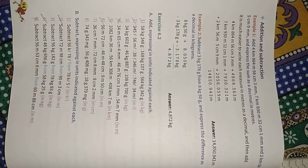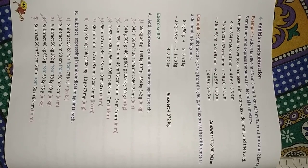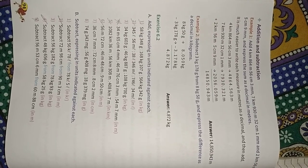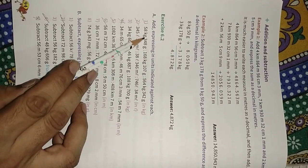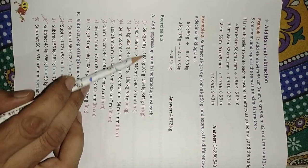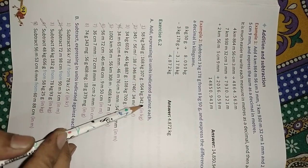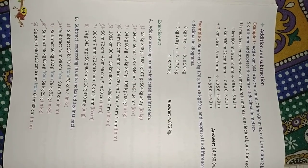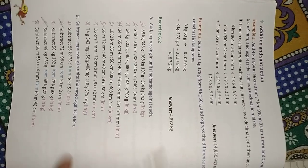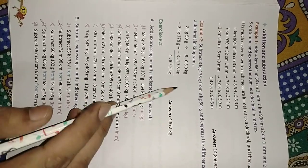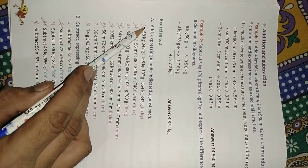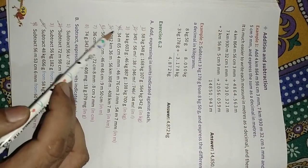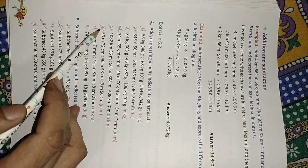Now exercise 6.2: add, expressing in the units indicated against each. We have to add the following units. First we have to convert these units into kilograms, then we add. We will do only four questions: part A — questions 2, 5, and 6.